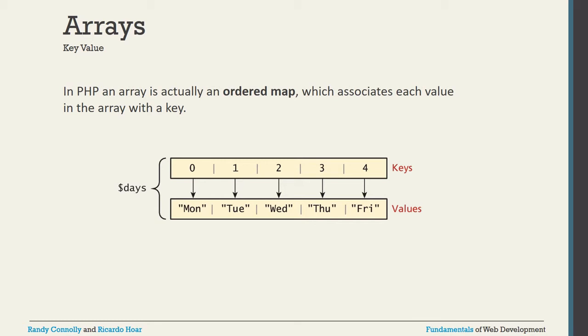For example, take Monday, Tuesday, Wednesday, Thursday, Friday as values. Each value has an indexing key: Monday is 0, Tuesday is 1, Wednesday is 2, Thursday is 3, Friday is 4. You can give this array a variable name — for example, dollar-sign days — and the associative keys are 0, 1, 2, 3, 4. This is what we call an ordered map.